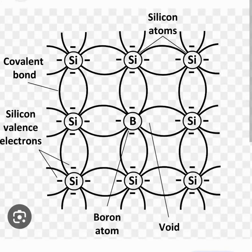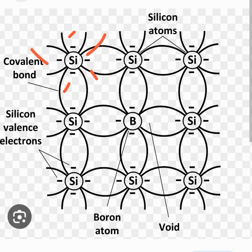Let's have another example where we understand the process of doping the silicon material. As shown in this image, we see that there is a silicon atom right over here, and as shown, each silicon atom has four electrons — one, two, three, four — they are called silicon valence electrons. So each silicon atom has four such electrons in their outer orbit.